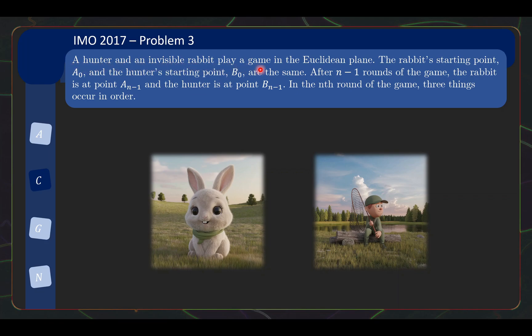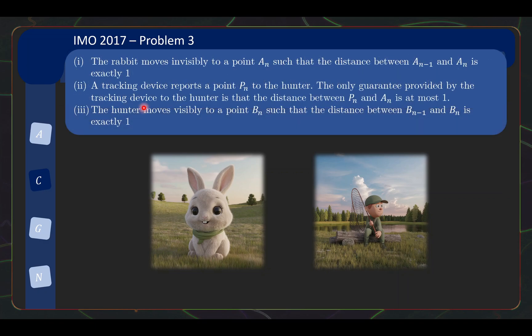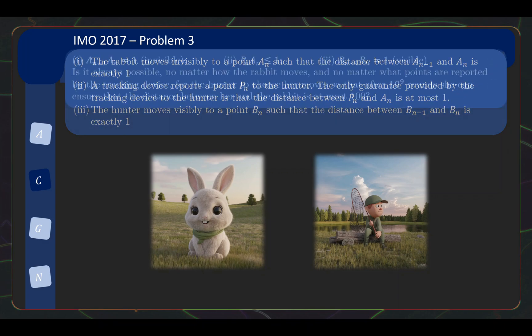A hunter and an invisible rabbit play a game in the Euclidean plane. The rabbit starting point A0 and the hunter starting point B0 are the same. After n-1 rounds of the game, the rabbit is at point AN-1 and the hunter is at point BN-1. So this is just notation for the points. In the nth round of the game, three things occur in order. Firstly, the rabbit makes a move. It moves invisibly to a new point AN such that the distance between AN-1 and AN is exactly 1.